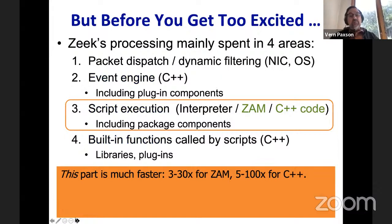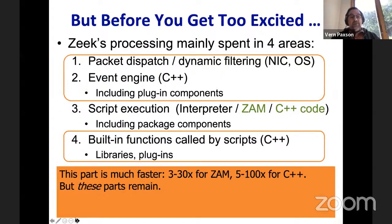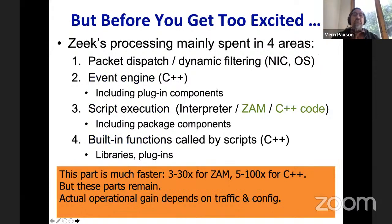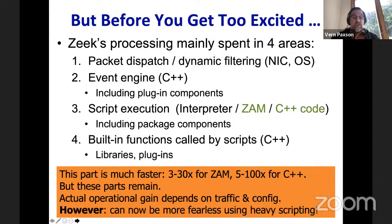The part I'm talking about is this third element, and it is a lot faster with these experimental ways of executing — three to thirty times for ZAM depending on how complicated the script is, and maybe five to a hundred times faster for C++. But all that other stuff is still there and none of that is changed. How much faster everything goes depends on Amdahl's law — you're bottlenecked on the slowest of these. However, the key point is: scripts become conceptually cheaper to employ, so we can afford to put a lot more processing in scripts because they're no longer as inefficient as historically.